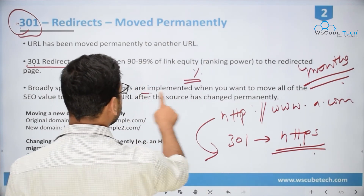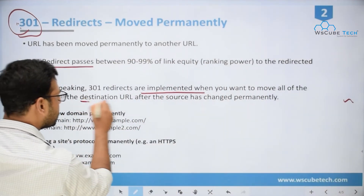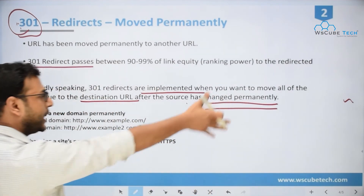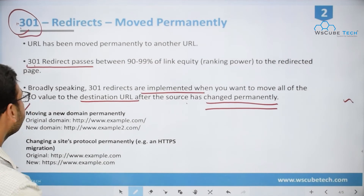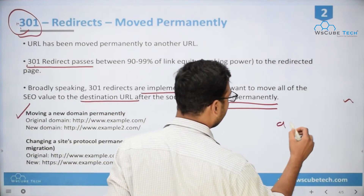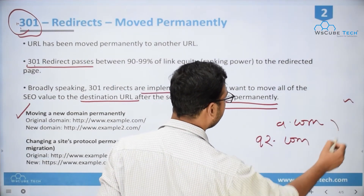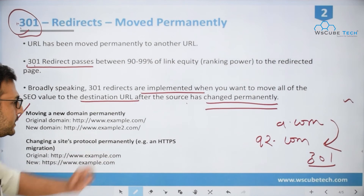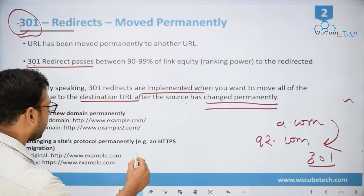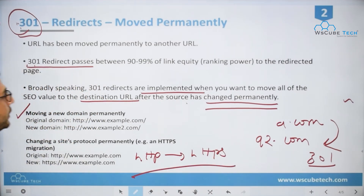Broadly speaking, 301 redirects are implemented when you want to move all of the SEO value — the link power — to the destination URL after the source has changed permanently. For example, if you are moving to a new domain, or purchasing a new domain, you use 301 redirection. Similarly, changing a site's protocol permanently — such as migrating from HTTP to HTTPS — also calls for a 301 redirection.